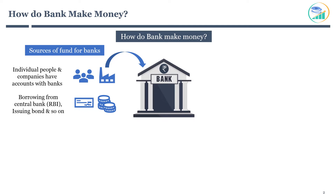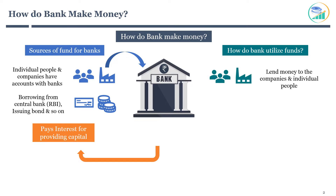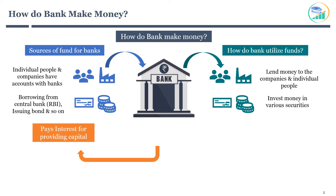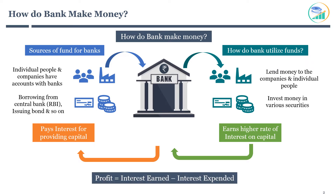Depending on the sources of funds, banks pay interest for providing capital. Now let's understand how banks utilize these funds. Banks are involved in business activities of lending money and investing. They can lend money to companies and individual people in various forms. The loans include personal loans, housing loans, vehicle loans, business loans, and so on. They can also invest this money in various securities. The goal is to earn a higher rate of interest on capital. Thus, a bank's profit is derived from the difference between the interest rates.